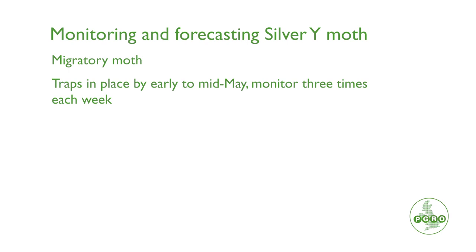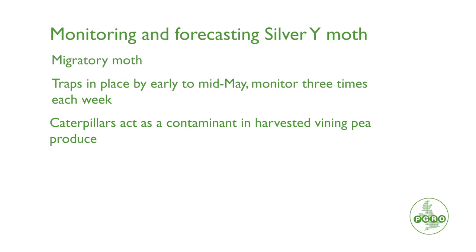The biggest issue with silver Y moth is contamination of the caterpillar in vined produce. The caterpillar is bright green, it has a looping action and it rolls up into a tight ball when it's disturbed. So at harvest, what you end up with is a tightly rolled caterpillar, bright green — the same size, shape and colour as a pea — and it goes through the harvesters and into the frozen produce. So that's why it's important to monitor in vining peas. Using a castellation trap, we can monitor for silver Y moth. This contains pheromones, as do the other traps I've talked about today.